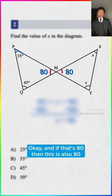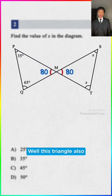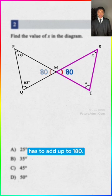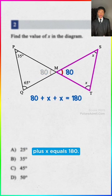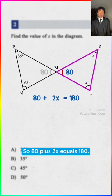Okay, and if that's 80, then this is also 80 because they're vertical angles, but how do we find x? Well, this triangle also has to add up to 180. So 80 plus x plus x equals 180. We can smash these two x's together, so 80 plus 2x equals 180.